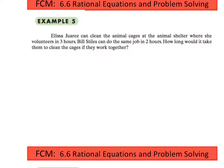Elisa Juarez can clean the animal cages. That's a really specific name. I don't know why it's so specific. Anyway, she can clean the animal cages at an animal shelter where she volunteers in three hours. And then Bill can do the same job in two hours. How long would it take them to clean the cages if they worked together?